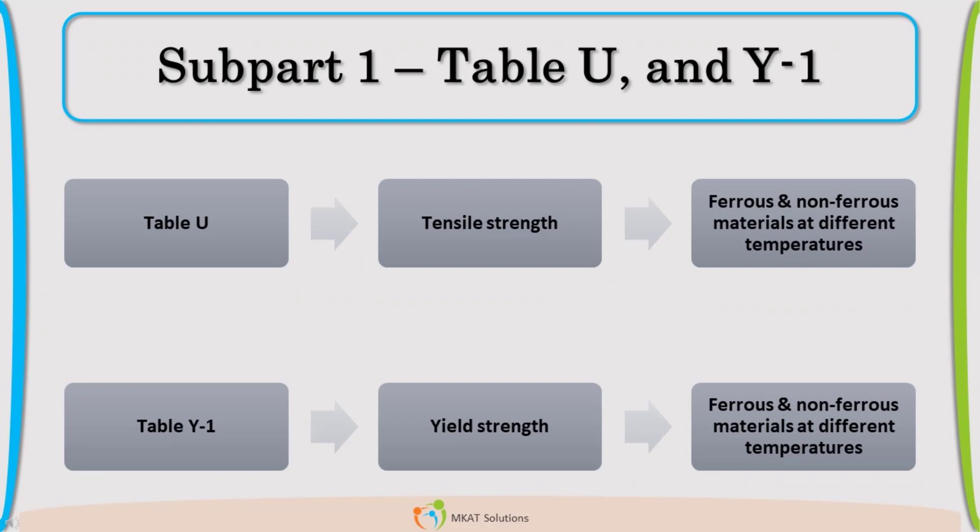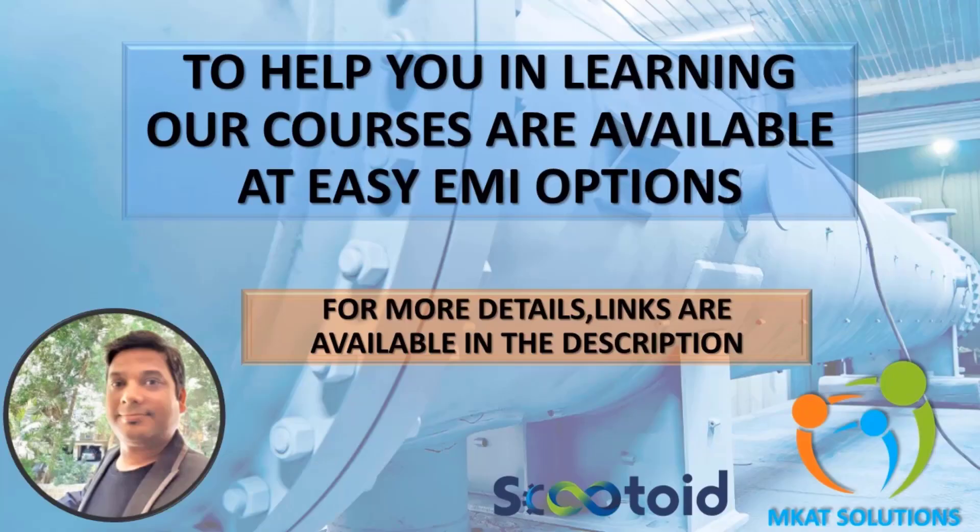Now, this was the structure of Subpart 1. Whatever we covered, this is part of Subpart 1 of Section 2 Part D. So Subpart 1 covers mechanical properties. So stress tables - Table 1A, 1B till 5A, 5B and then Table U and Y1. This is Subpart 1.